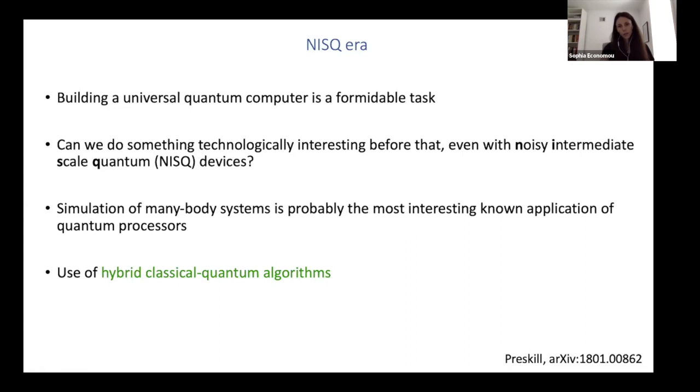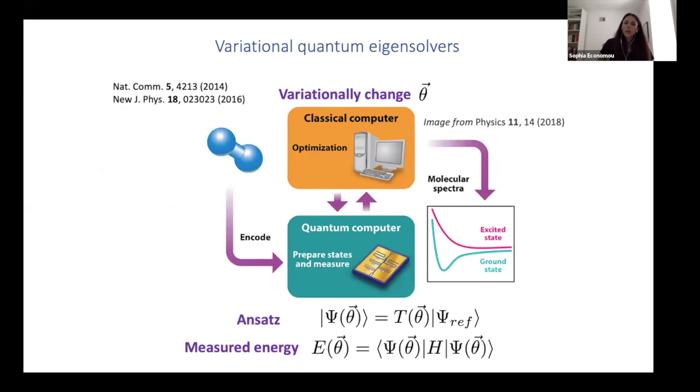So these types of processors focus on hybrid classical quantum algorithms. Since the quantum processor is not too powerful, you want to leverage the classical computer as well. And this leads to using or trying to employ variational quantum algorithms. And these are based on the variational principle of quantum mechanics, which also of course is well known and pre-exists the field of quantum information.